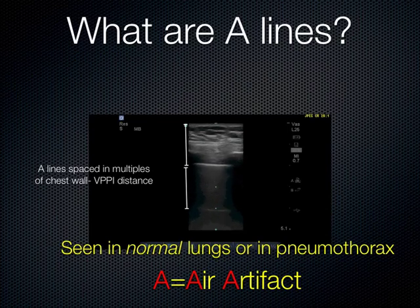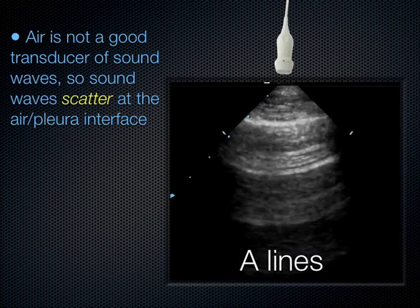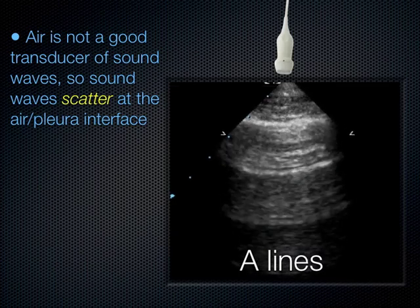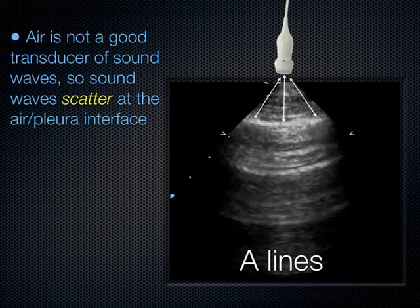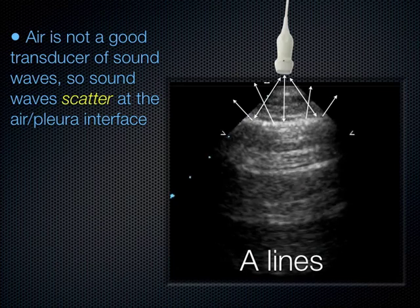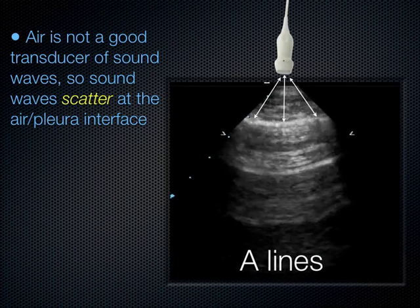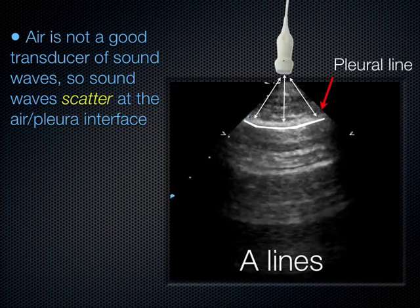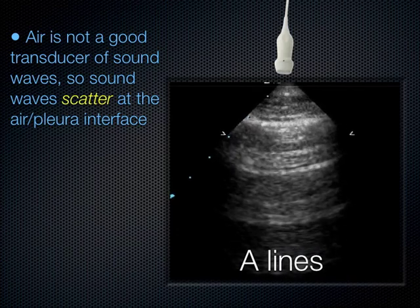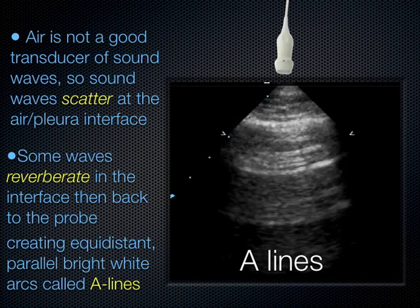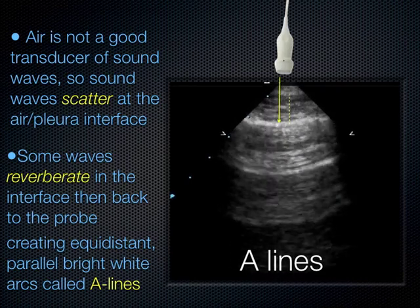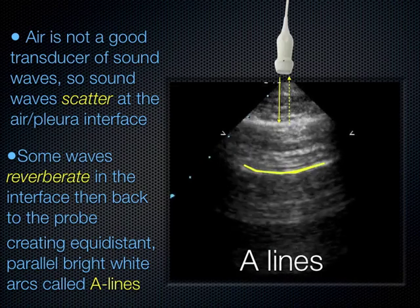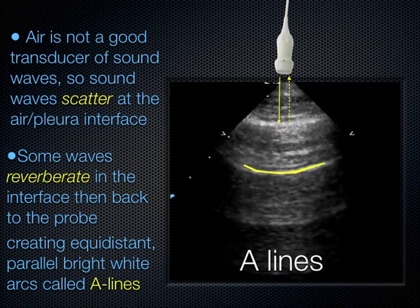Another reminder: air is just not a good transducer of sound. The sound reaches the pleural line and most of it scatters back. The ones that do reach back to the probe in an organized fashion create an image — that's the pleural line. However, some sound waves get stuck in the pleural line, reverberate, and reach back to the probe later, and that ends up being interpreted as lines that are lower. Your lungs are not striped — this is because there's air, and the difference between the air and the pleural line creates this artifact.